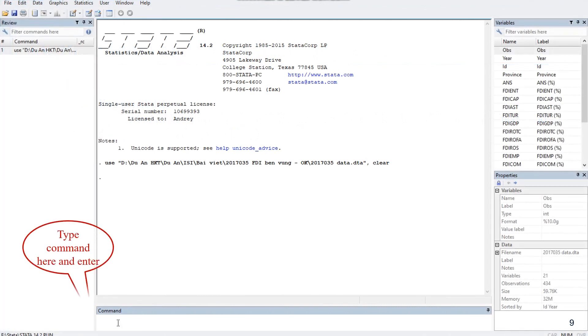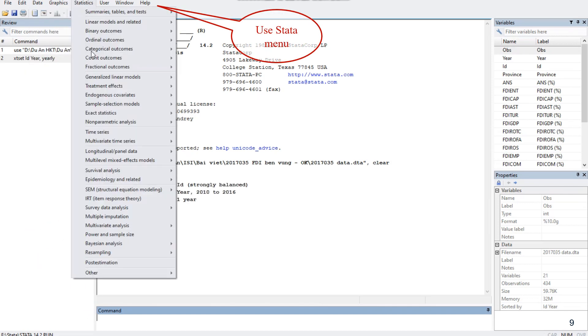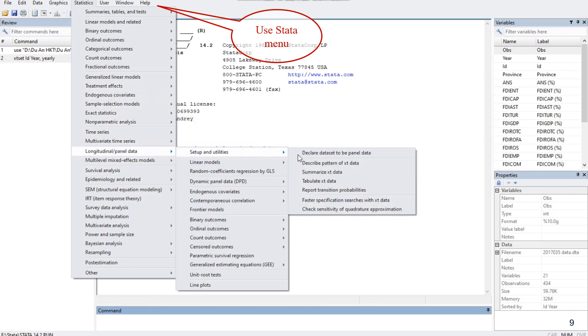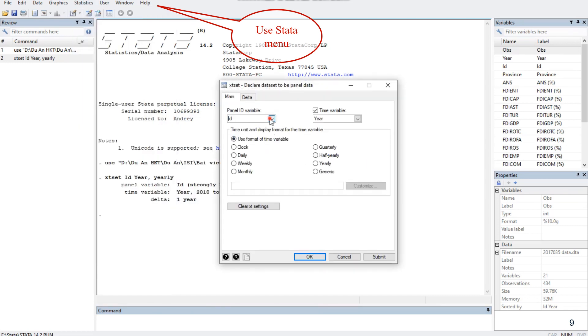Type the command here. Note that Stata distinguishes capital letters, so you must type exactly the variable name. Or you can click this command on the Stata menu by avoiding typing errors. In this case, ID represents the entities that is Vietnam provinces, and year represents the time variable.